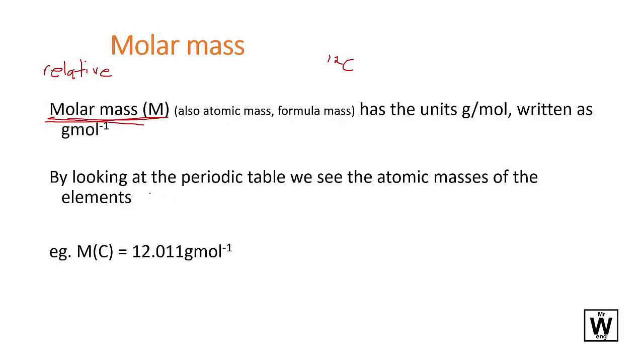And so the way we do that is we look at the periodic table and we write it like this with the big M. And the reason why it's not, well the isotope carbon-12 has an atomic mass of 12. But because some of the carbon is carbon-14 or whatever there's a small percentage of that.